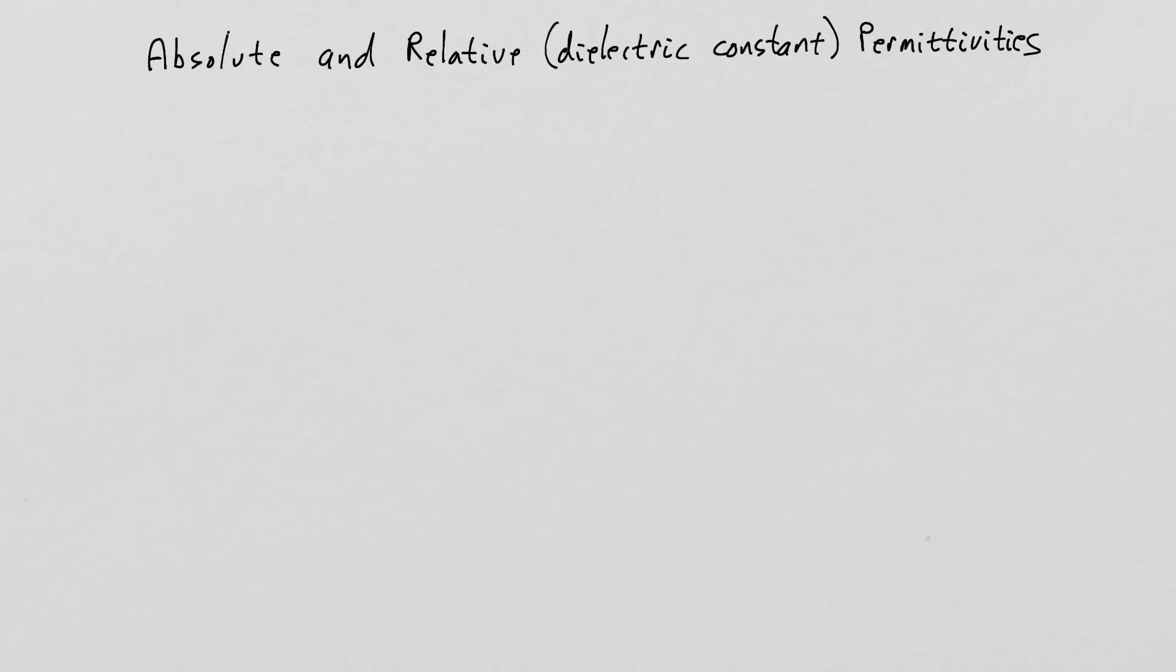I would like to take a look at the concepts of absolute and relative permittivities. Dielectric constant is another name for relative permittivity. Let's look back at the expression we had relating the electric flux density field to the electric field intensity and the polarization.